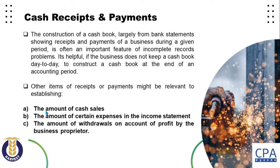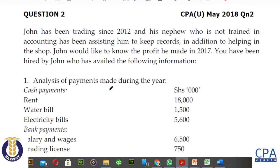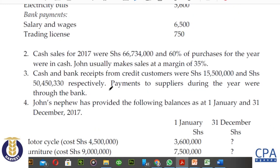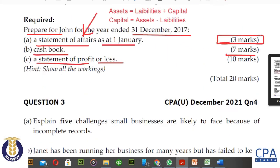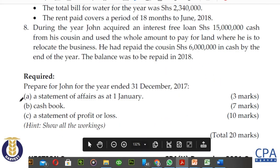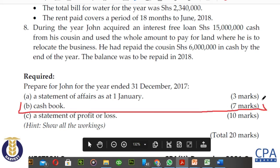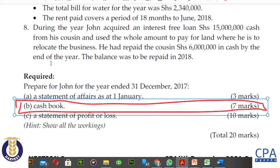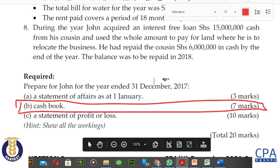The cash book will help us in identifying cash sales. It will help us in ascertaining expenses that have been cleared in cash. It will also help us in pointing out the drawings made by the business proprietor. So in our May 2018 question 2, we are required in part B to prepare or construct the cash book of the business, because I presume that John the proprietor does not keep a cash book on a day-to-day basis.